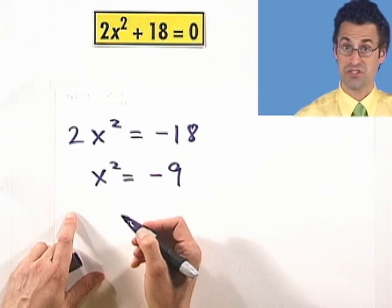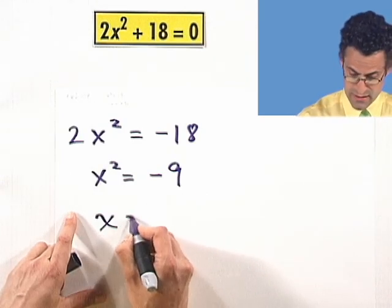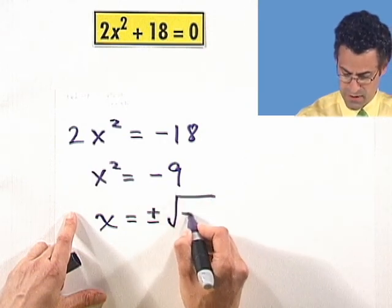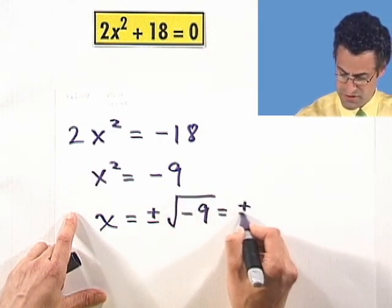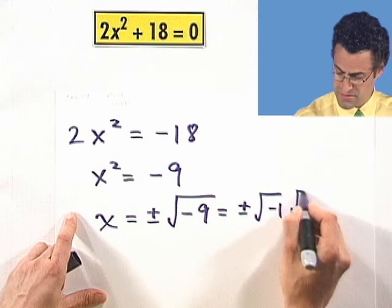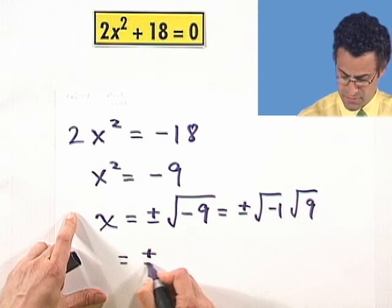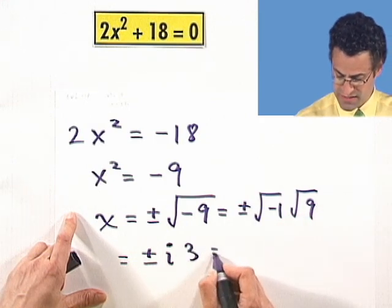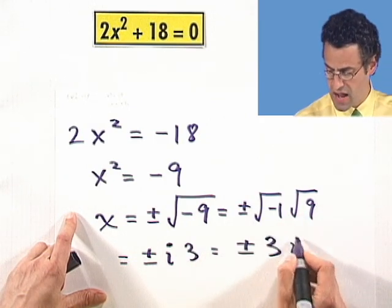And so now I can take plus or minus the square root of both sides and see x equals plus or minus square root of negative 9, which equals plus or minus square root of negative 1 times square root of 9, which equals plus or minus i. Square root of 9 is 3. And so I see plus or minus 3i.